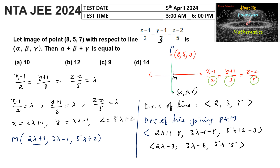These are the direction ratios of PM. Since PM is perpendicular to the given line, we apply the condition a1·a2 + b1·b2 + c1·c2 = 0, where (a1, b1, c1) are the direction ratios of one line and (a2, b2, c2) are the direction ratios of the perpendicular line.